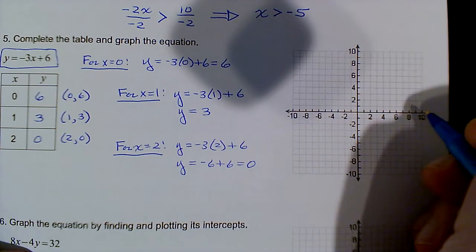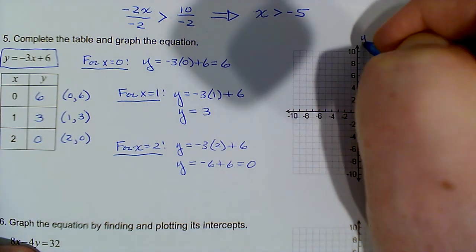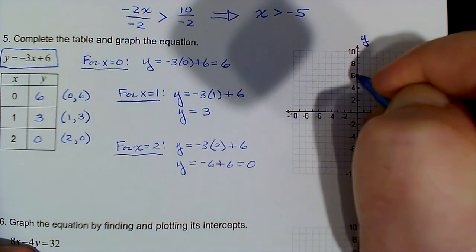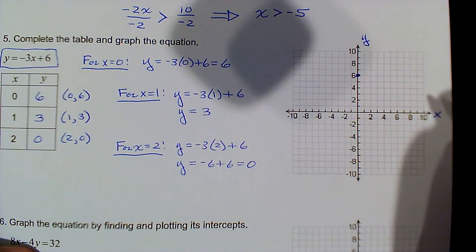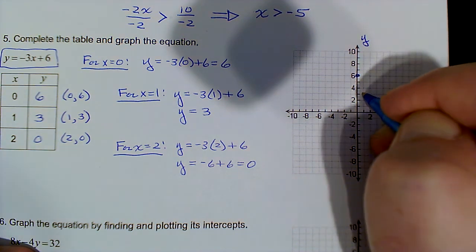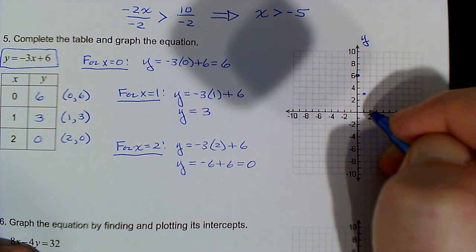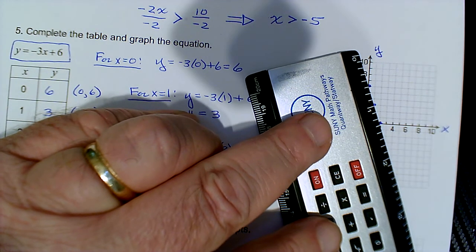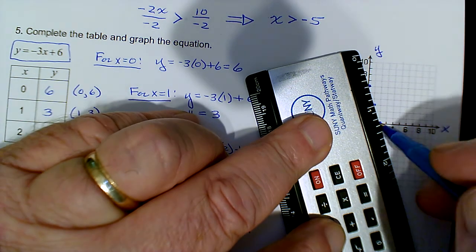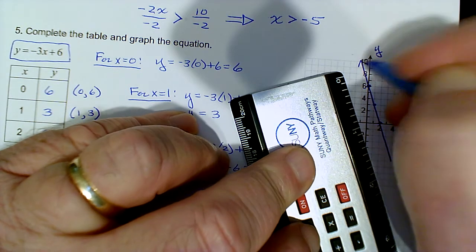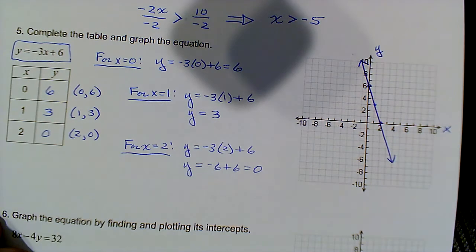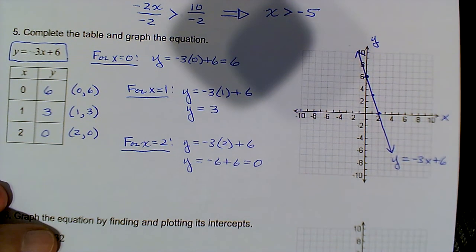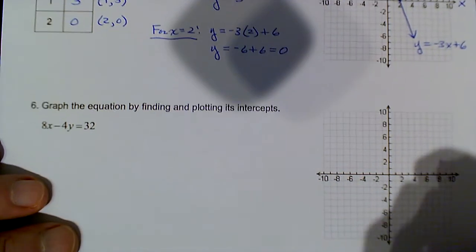Let's plot those on the graph. You'll be using MyMathLab, so remember how to use the graphing tool. Plot the point (0, 6) — that's the y-intercept. Plot (1, 3): 1 in the x, 3 in the y. Then the point (2, 0): 2 in the x, 0 in the y. Those three points should line up. Using a straight edge, they line up neatly. MyMathLab has a unique graphing tool, and I always like to label the equation after graphing it.